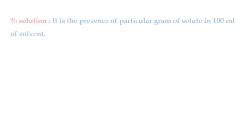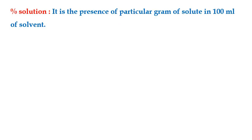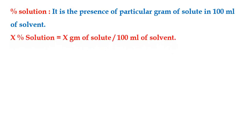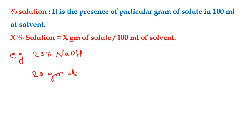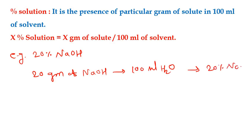A percentage solution is the presence of a particular number of grams of solute in 100 ml of solvent. To prepare an x percent solution, take x grams of solute dissolved in 100 ml of solvent. For example, to prepare 20 percent NaOH, dissolve 20 grams of NaOH in 100 ml of water to obtain a 20% NaOH solution.